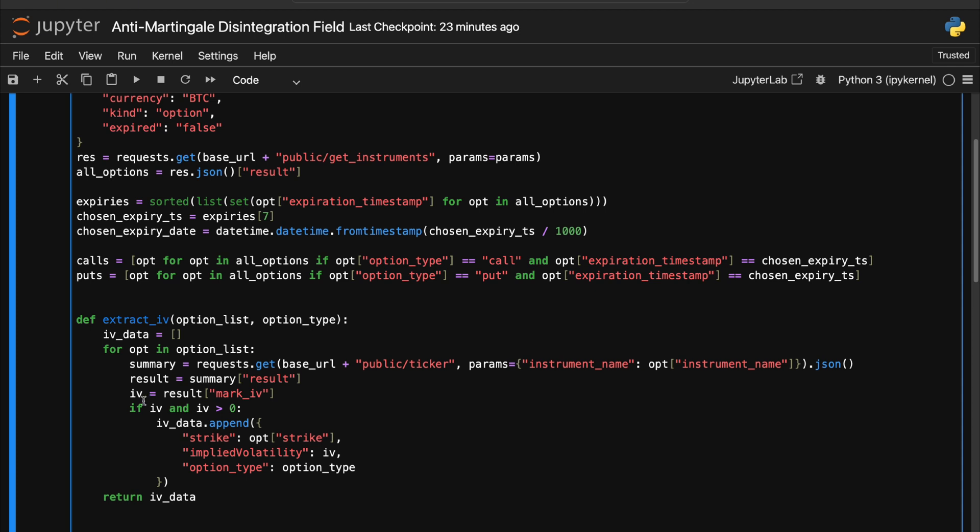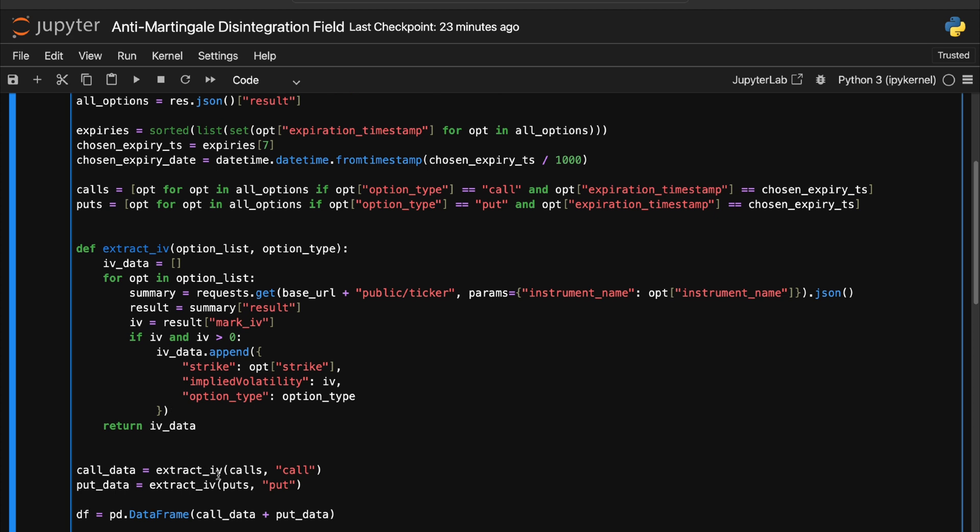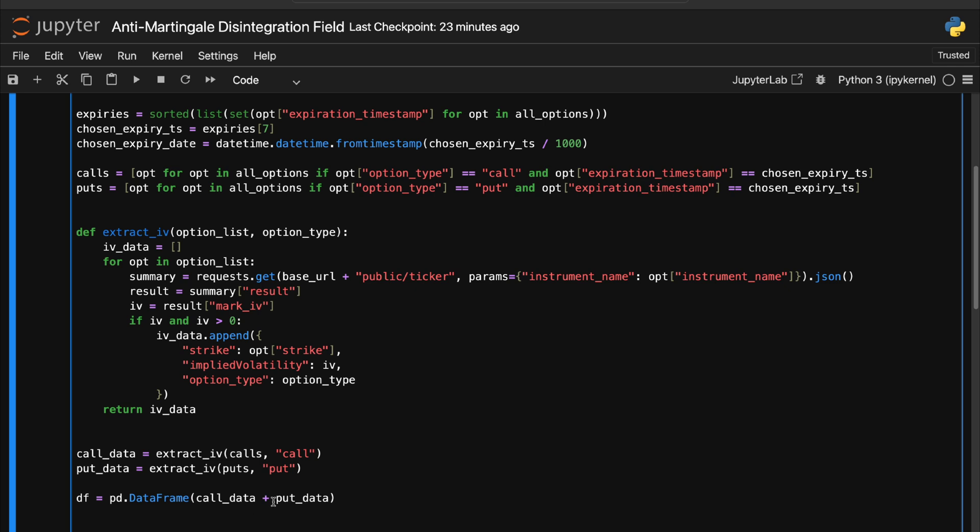Once we have the implied volatilities for both calls and puts, so you see I'm calling this function both for my calls and my puts, I'm just putting them together in one data frame.